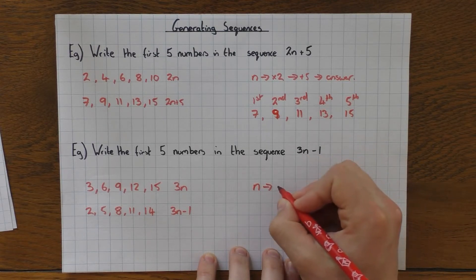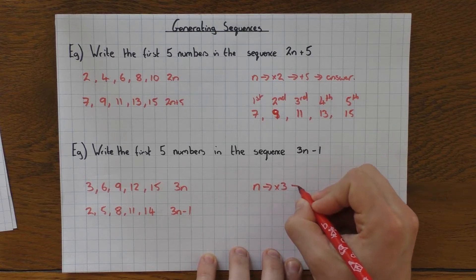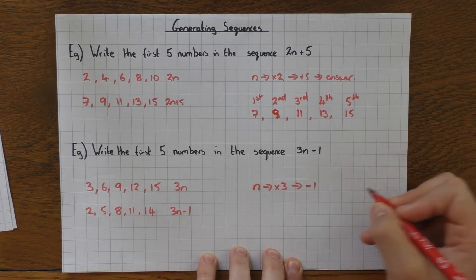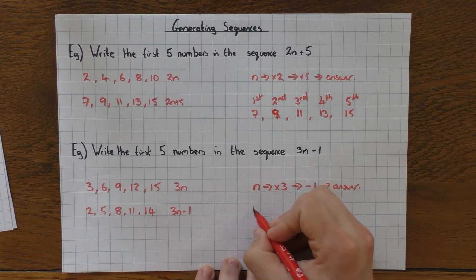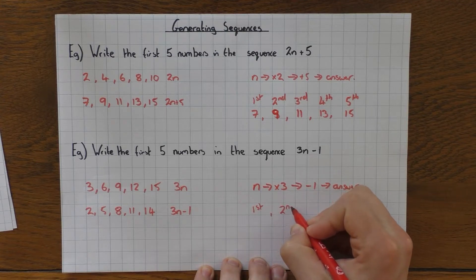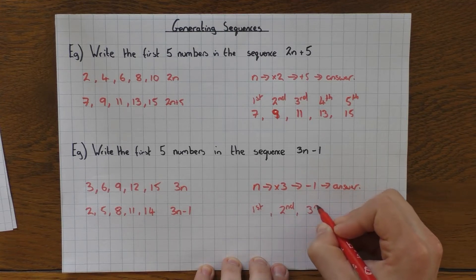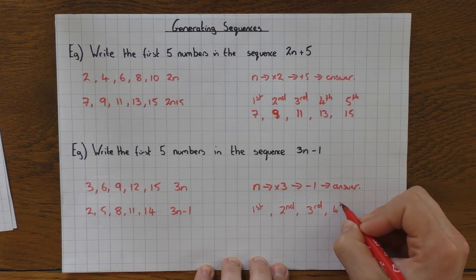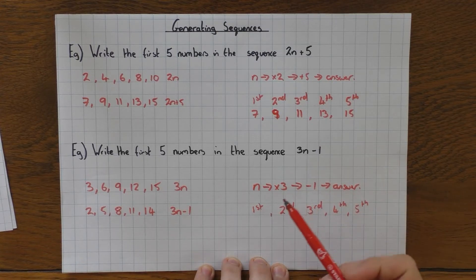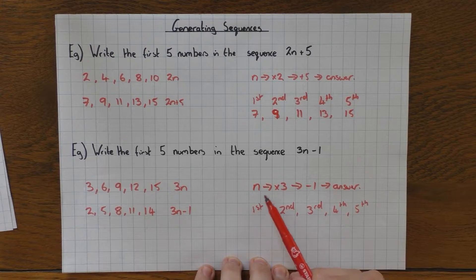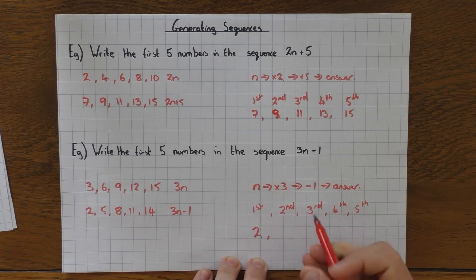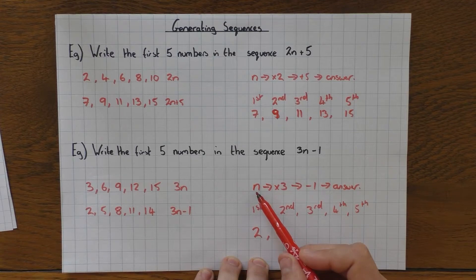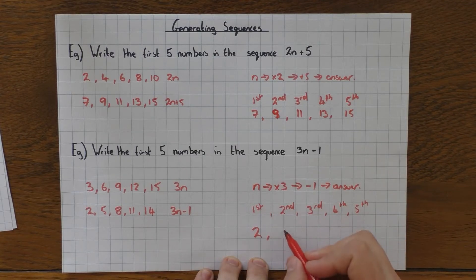I have n, I times it by 3 first, and then I take away 1, and that gives me my answer. So for the first term, n would be 1, 1 times 3 is 3, take away 1 is 2. Second number in the sequence, n would be 2, 2 times 3 is 6, take away 1 is 5.